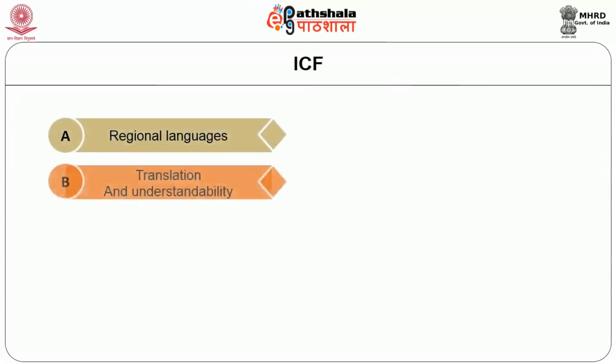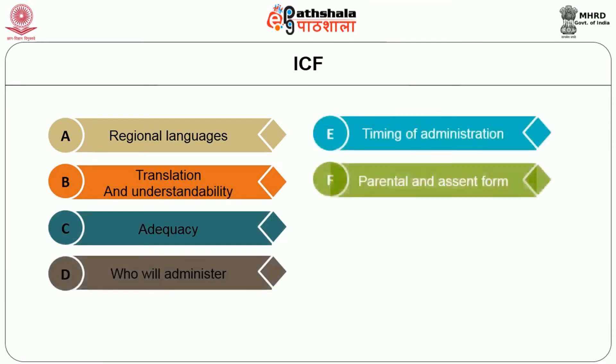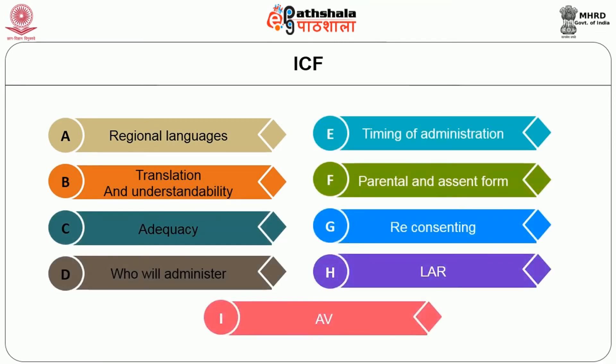The informed consent form should be in regional language, translated into an understandable language, with adequate information. It should also state who will administer it and the timing of administration. If children are used, how will you take parental consent? For adolescents, you also have to take the assent of the child. In case new information comes up during the study, you have to go back to the individuals and take a re-consent — whether you have provision for that. For children and those who are vulnerable and not capable of giving consent on their own, there is a legally acceptable representative who will give consent. Wherever necessary, audio-visual recording can be done, especially for vulnerable groups.